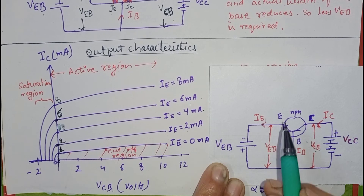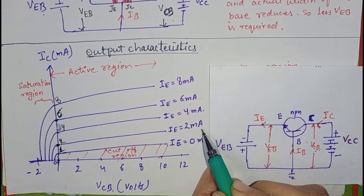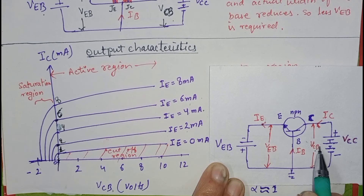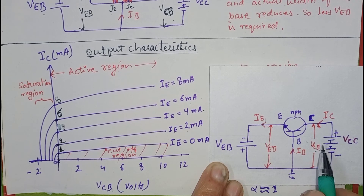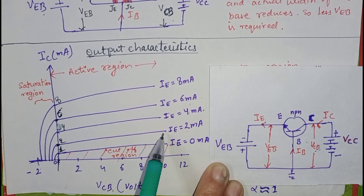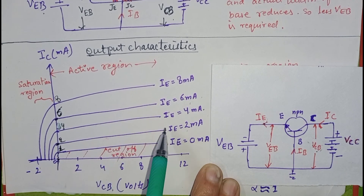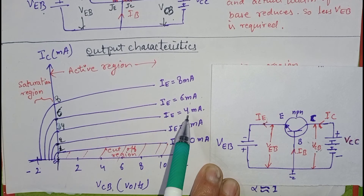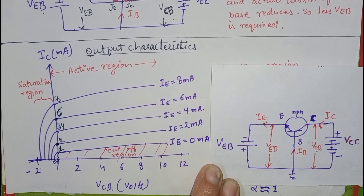Then we will change the value of IE and fix it equals to 2 mA, then change the value of VCB and note the value of current. For some readings, we will get this curve. Then we can get these curves by fixing the value of IE at 4 mA, 6 mA, and 8 mA.